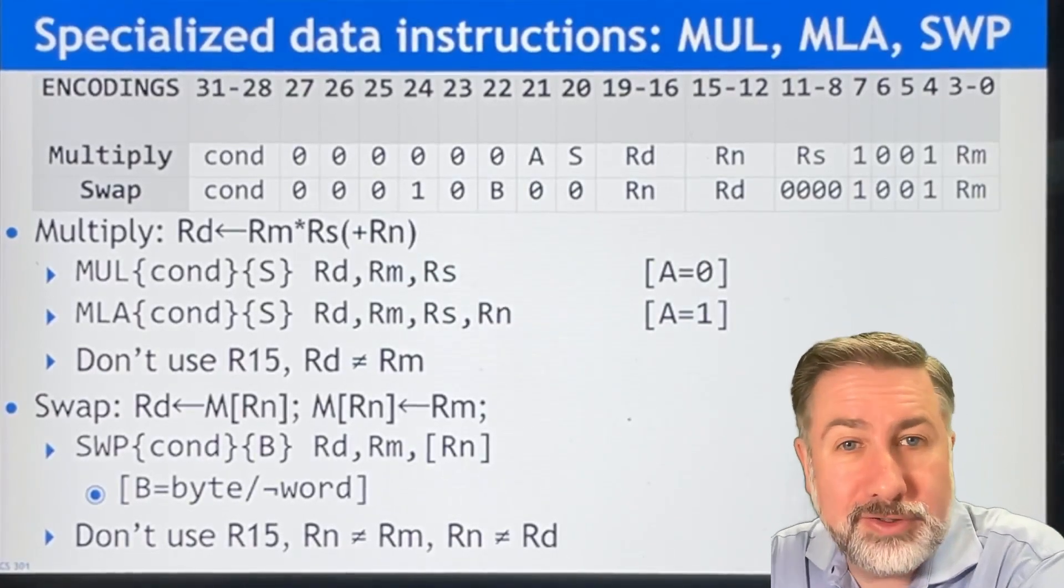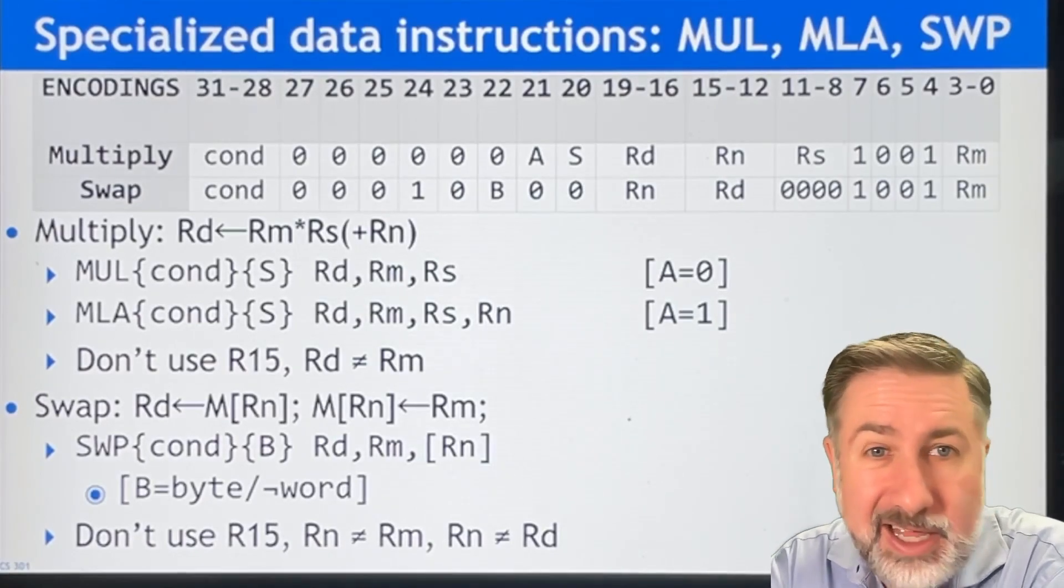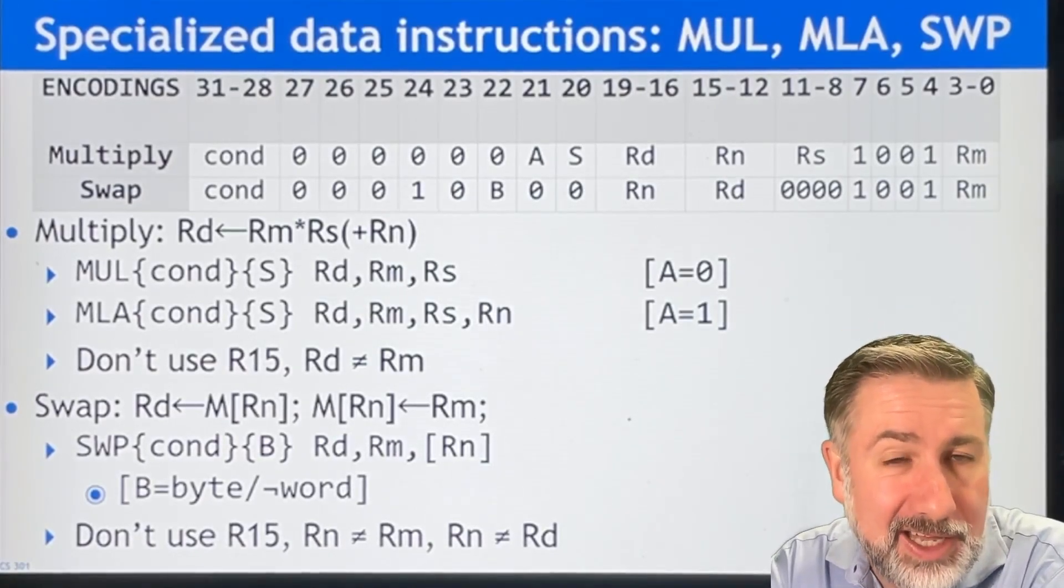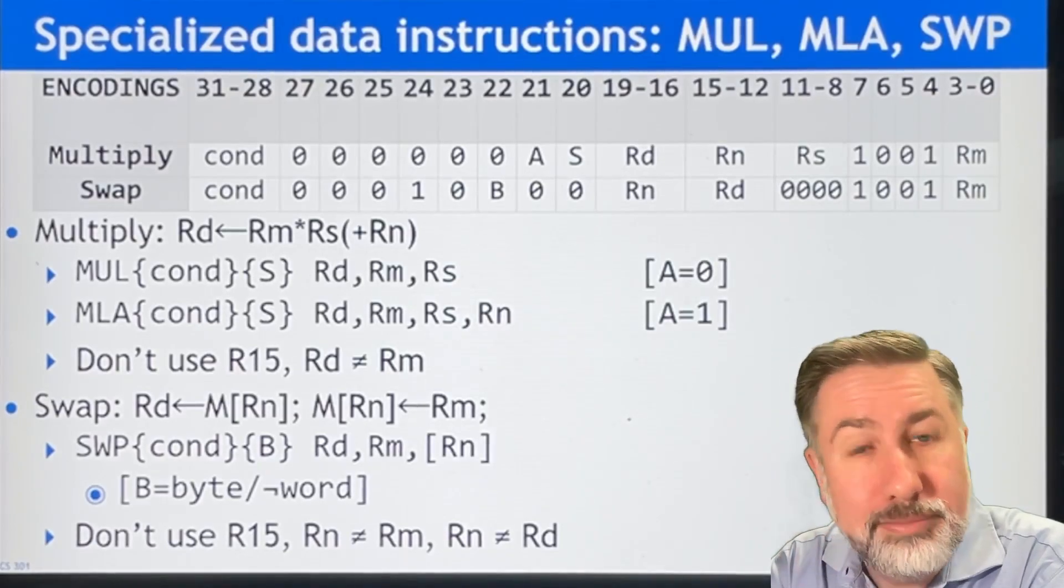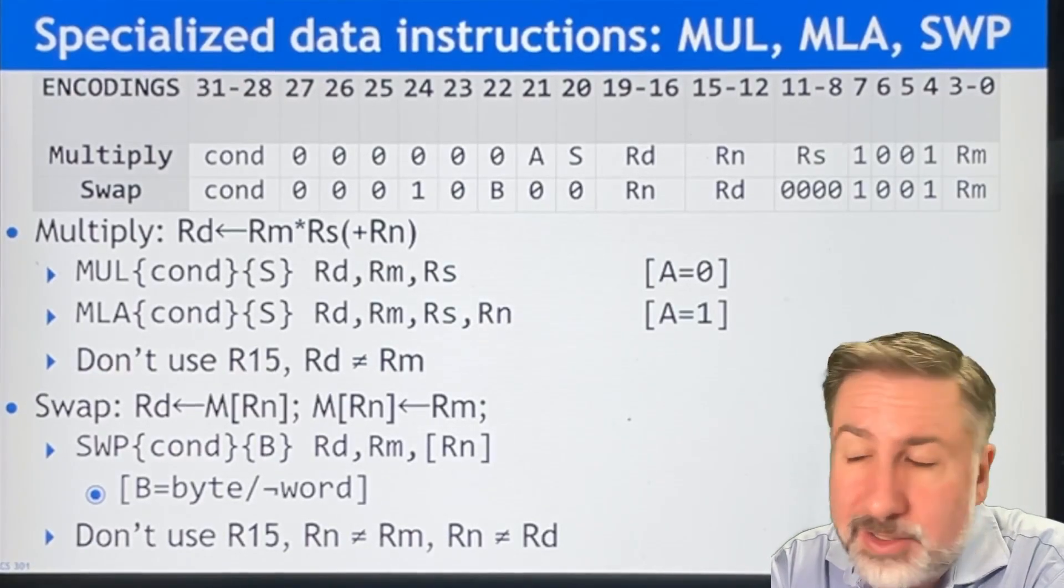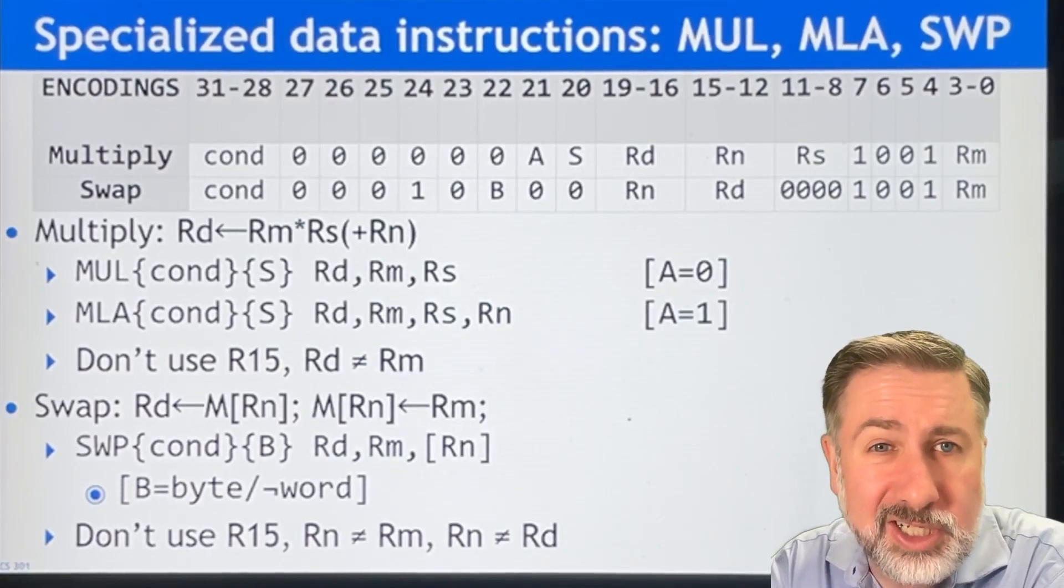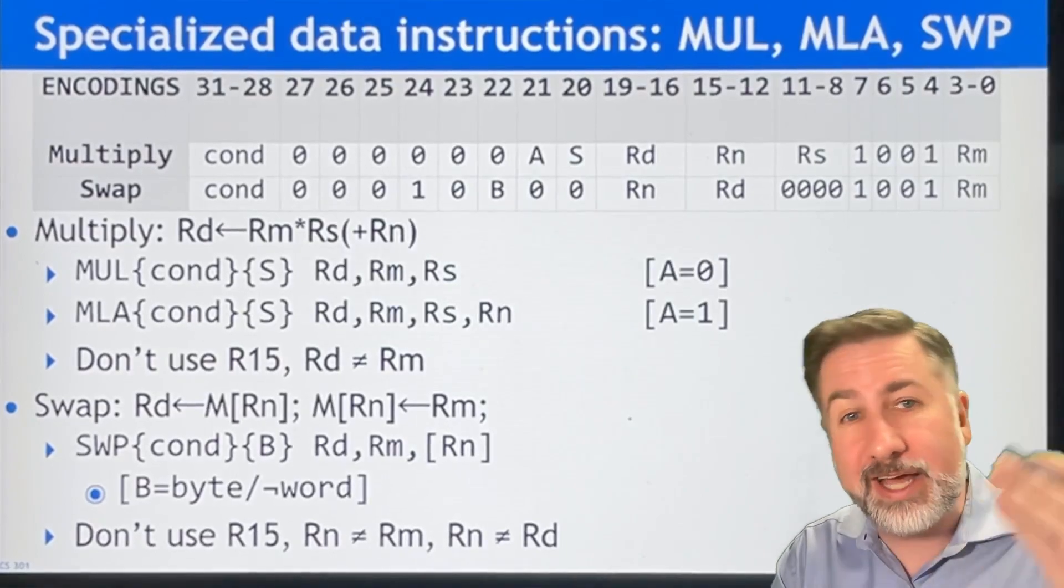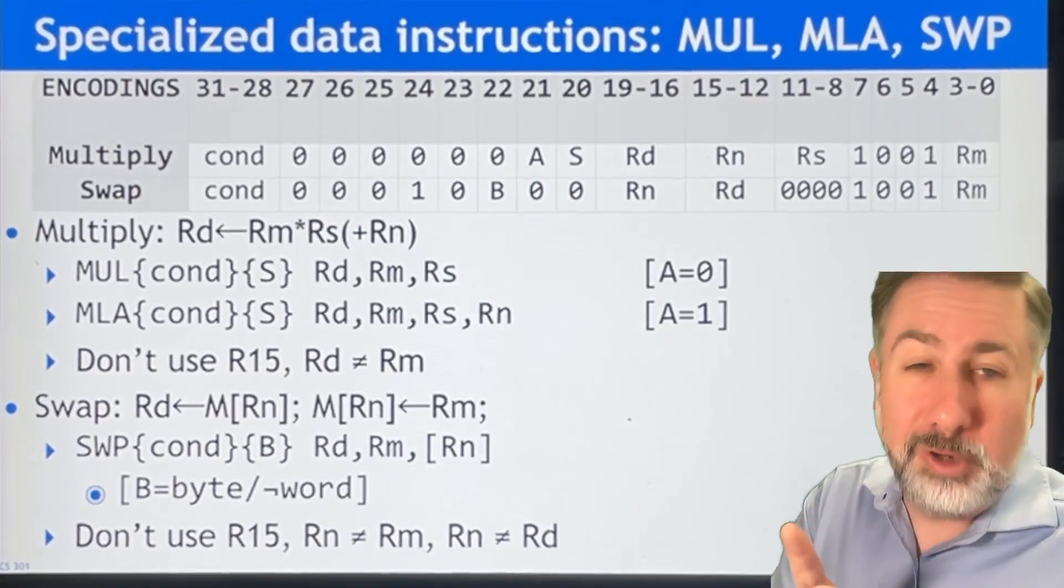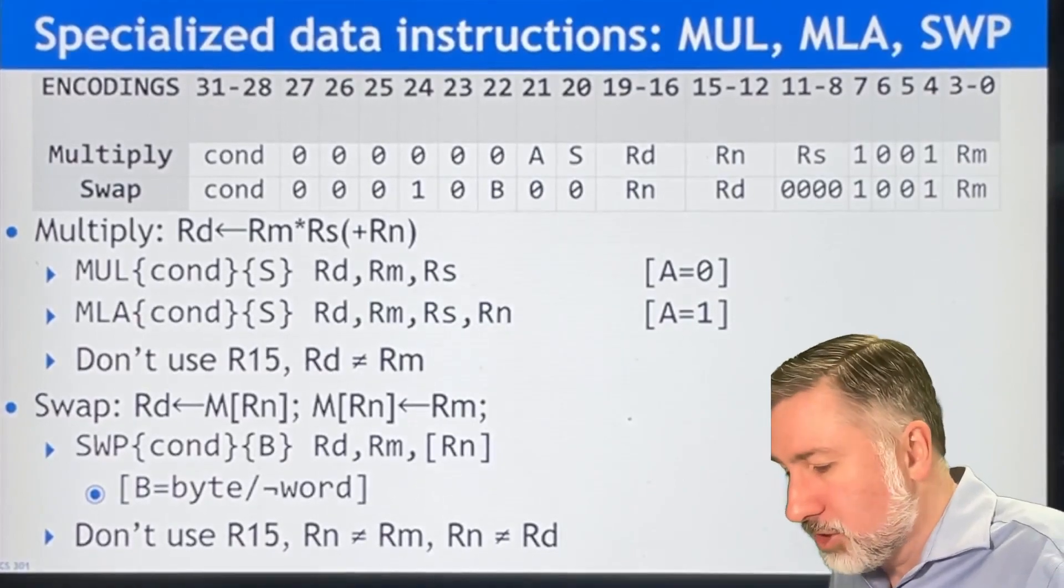These are important because they are used often and they are a little more complicated than just regular adding and logic. As we saw in the previous videos, computing multiplication is a long complicated process because it's a state machine process. You have to shift and add and shift and add and shift and add. So the multiply instructions in ARM are specialized instructions.